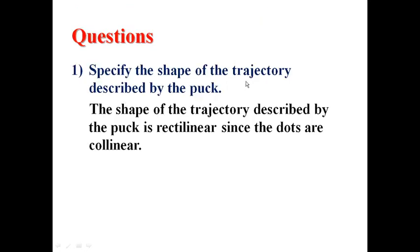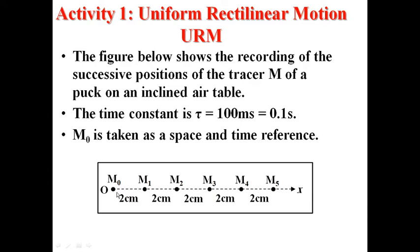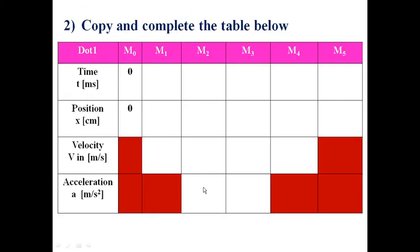Question 1: Specify the shape of the trajectory. The object is moving along a straight line. The trajectory is rectilinear. And as usual, copy and complete the table.